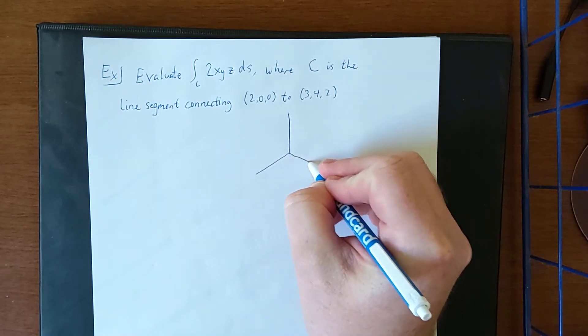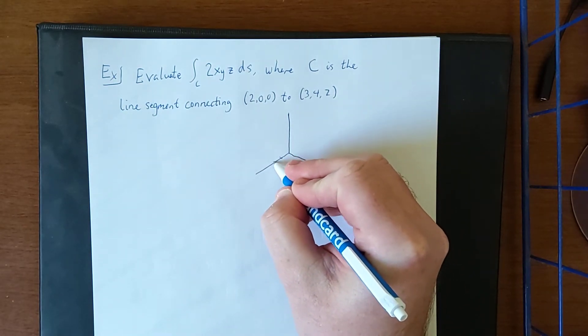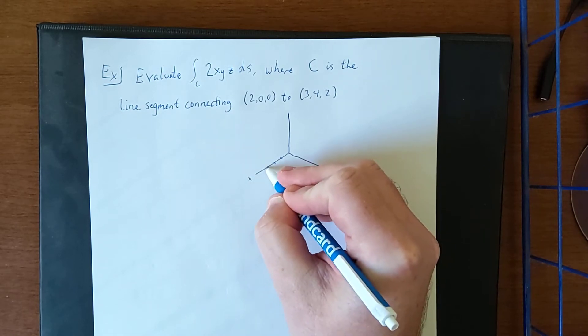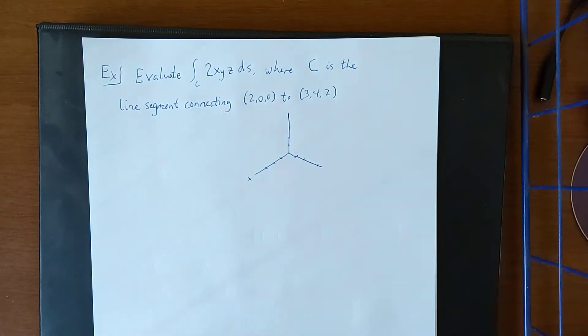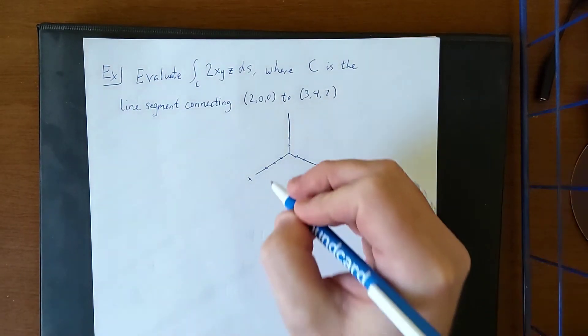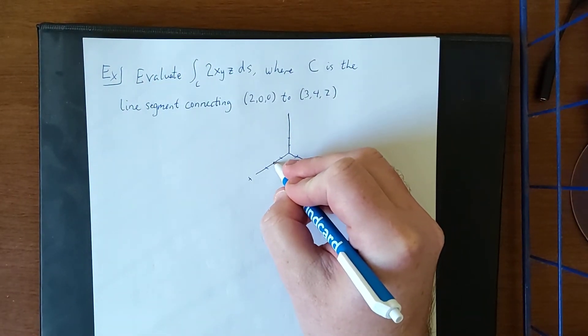So in three dimensions, (2,0,0) would be two units down the x-axis, and z would be up two. So (2,0,0) would be this ordered triple right here.